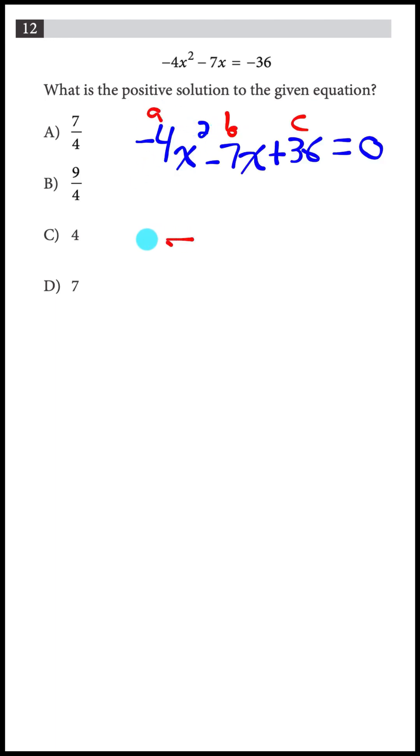I could try and solve it by factoring by finding numbers that multiply to a times c. Negative 4 times 36 is negative 144, and add to b, which is negative 7.